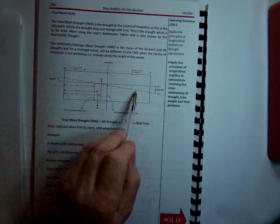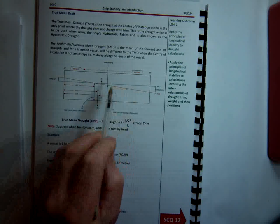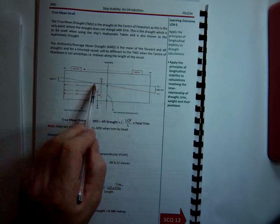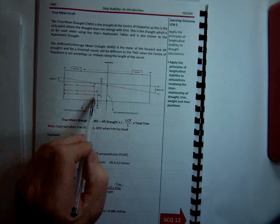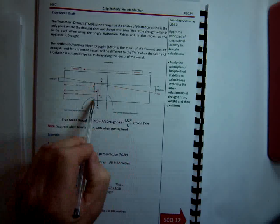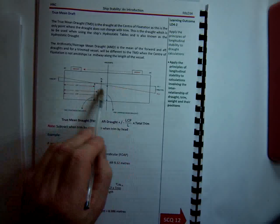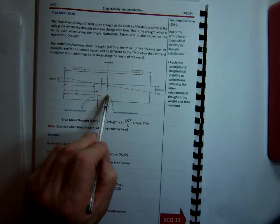And all the way along this water line, the draft is changing. And at one point only does it not change. And that's where the true mean draft occurs. And you can see on this sketch the difference between the true mean draft and the average mean draft.